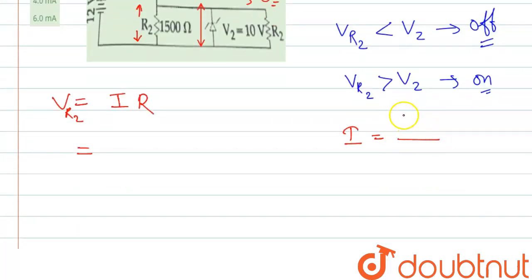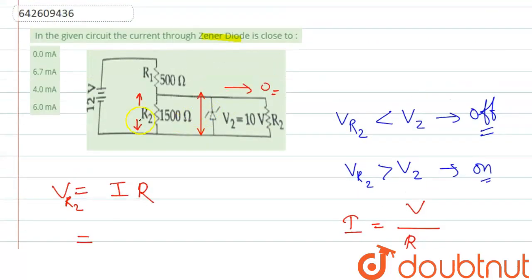So we can write here V by R, and this will be the voltage is 12V and resistance is 500 and 1500 Ohm.